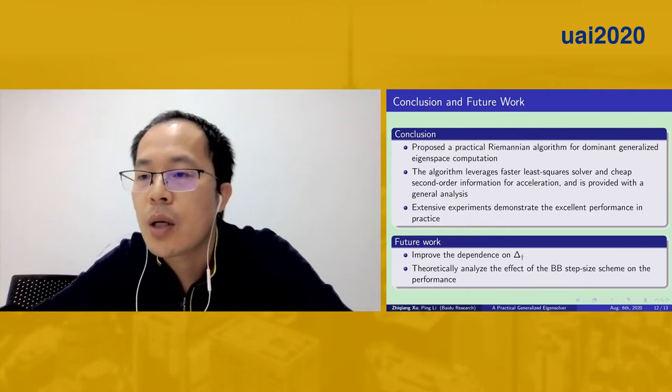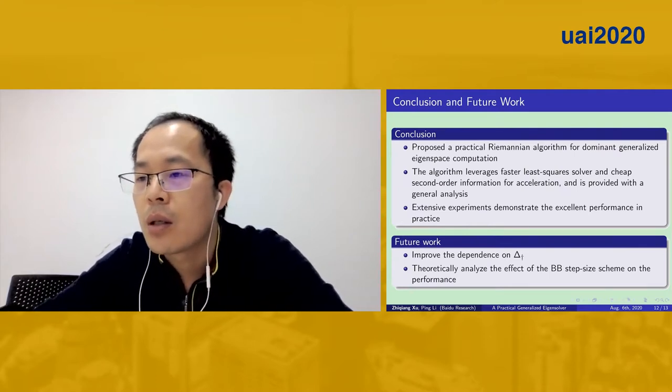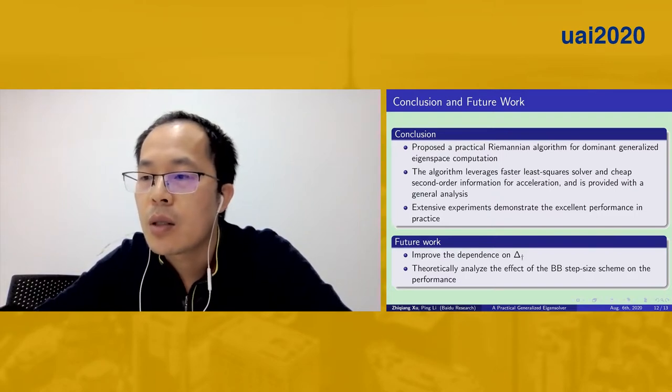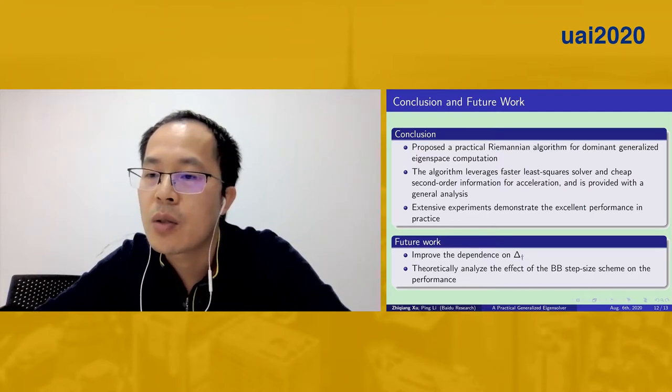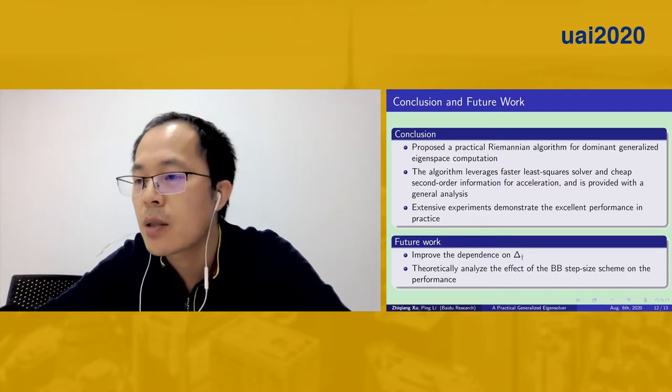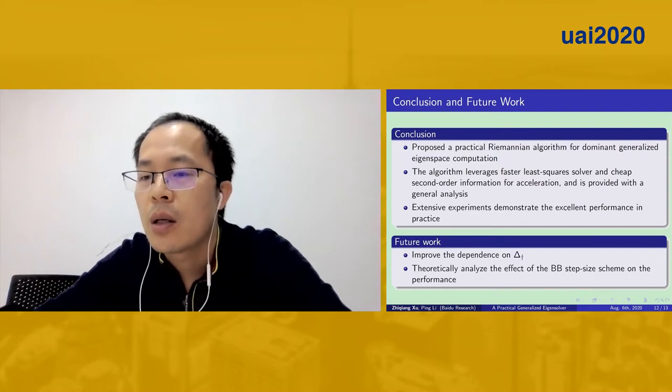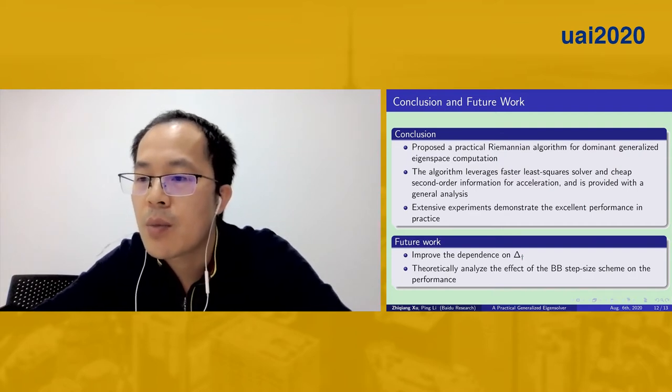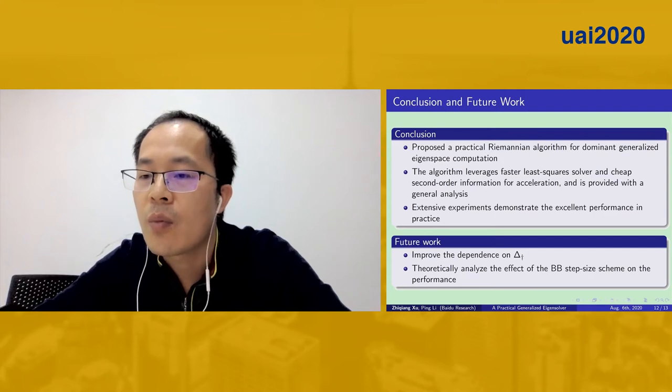So the conclusions are that we proposed a practical Riemannian algorithm for dominant generalized eigenspace computation. It is easy to use and can leverage faster least-squares solver and achieve second-order information for acceleration. A general analysis is provided as well, and the extensive experiments demonstrated its excellent performance in practice.